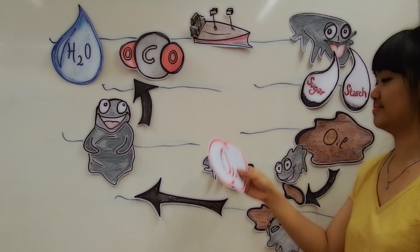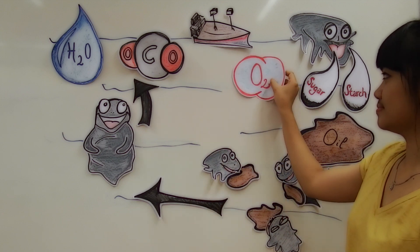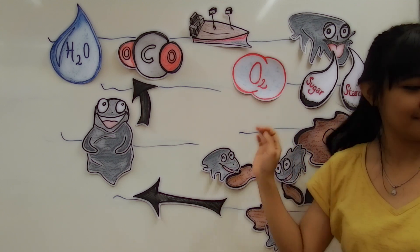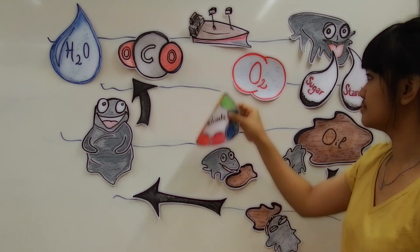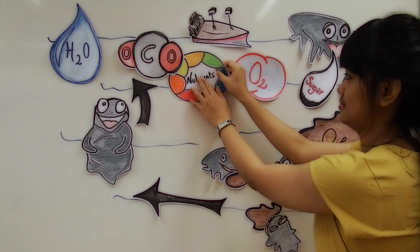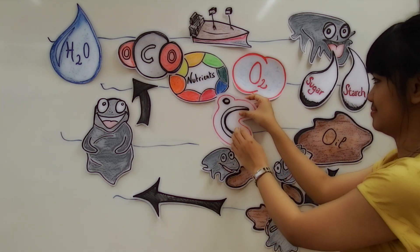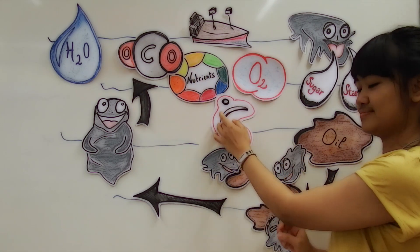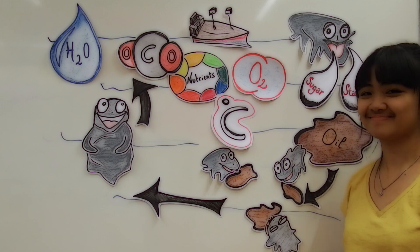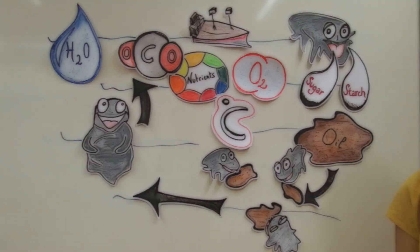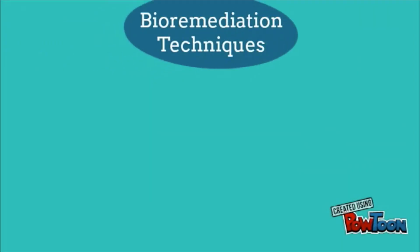There are some specific conditions for microbes to work better. First, we need oxygen in the water. Second, there should be enough nutrients in the ocean. Third, the water temperature should be around 15 to 20 degrees Celsius. There are different biological techniques to grow and stimulate bacteria for effective bioremediation.